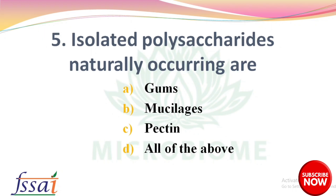Next question: isolated polysaccharides naturally occurring are — options: gums, mucilages, pectin, all of the above. The right answer is option D, all of the above — gums, mucilages, and pectin.